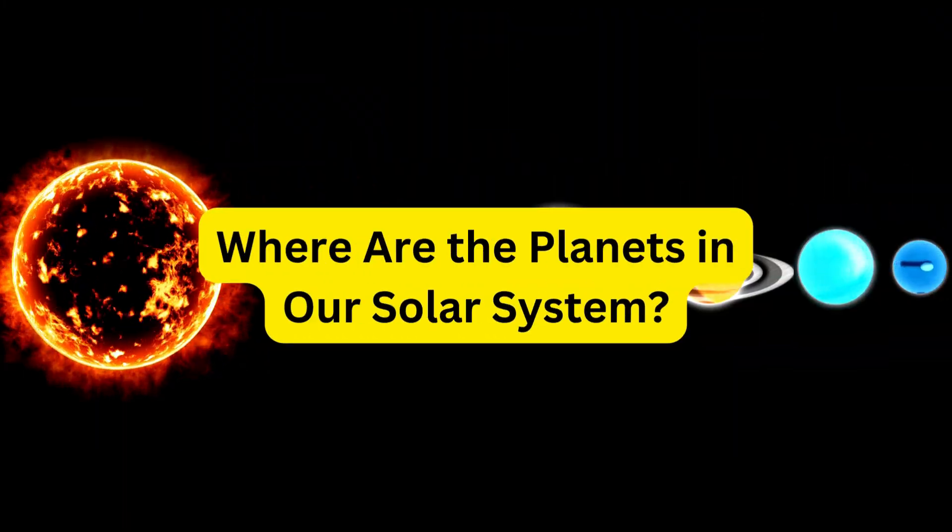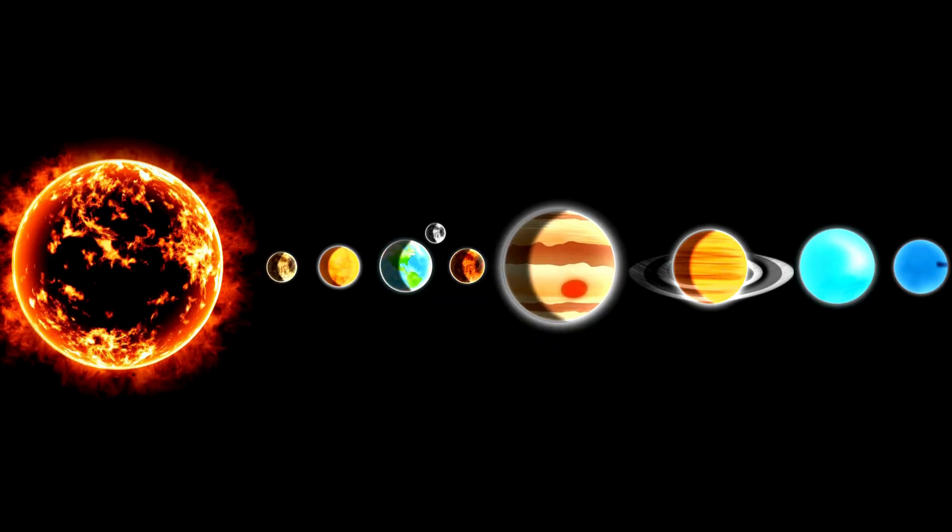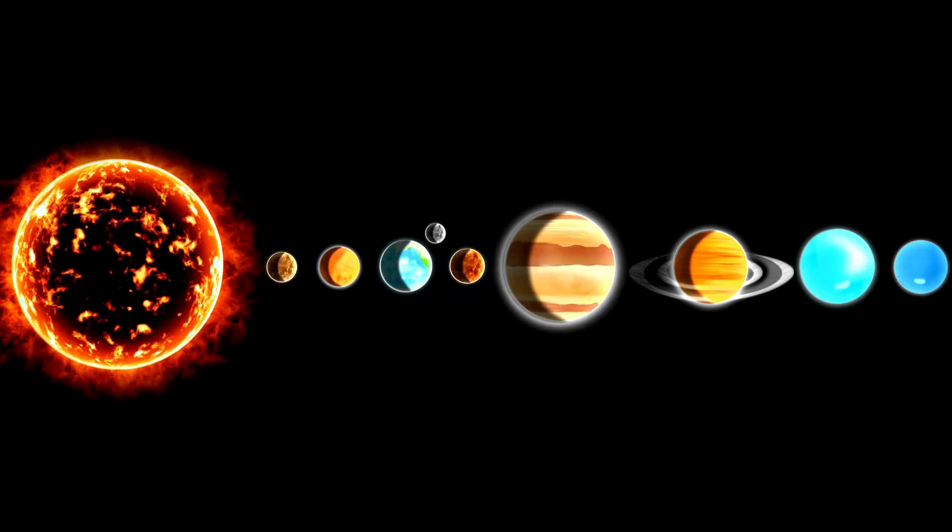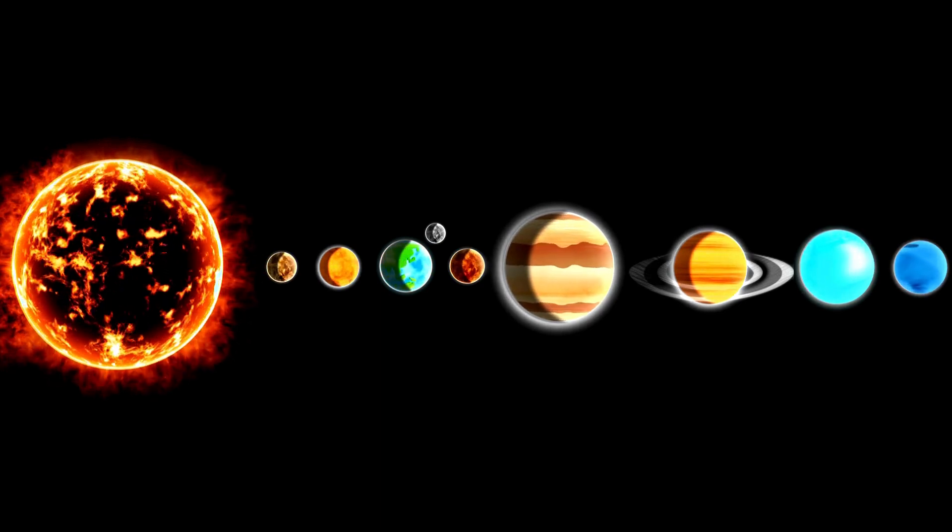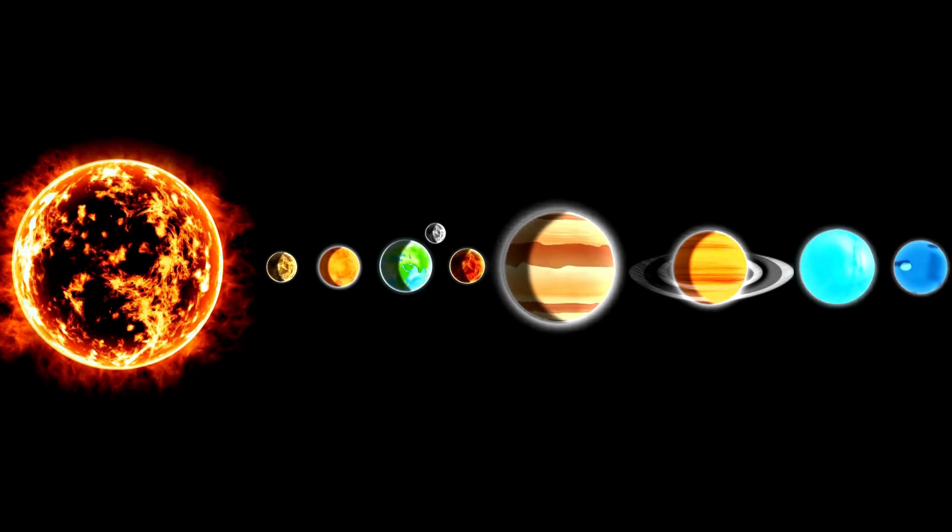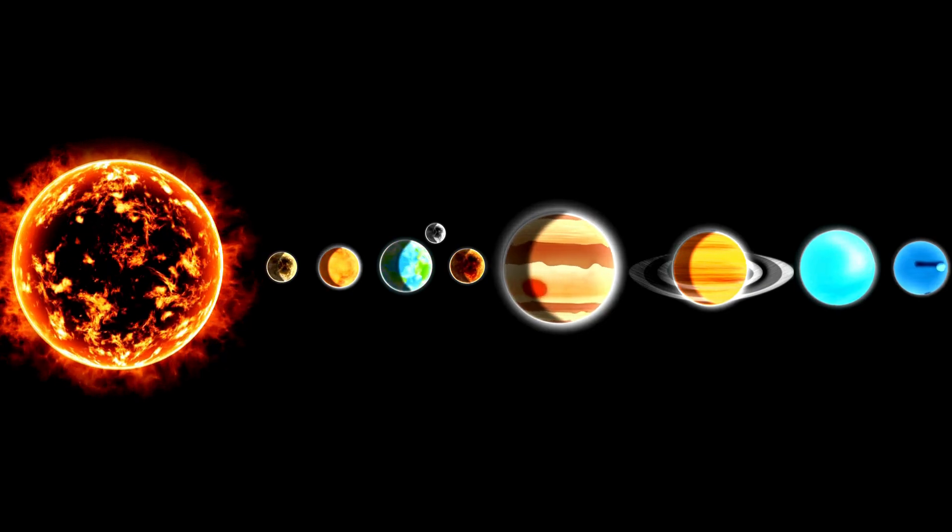Where are the planets in our solar system? Imagine the sun in the center like a king on a throne. Then, starting close to the sun and moving outwards, we have Mercury, Venus, Earth, and Mars. These are the inner planets and they are rockier.